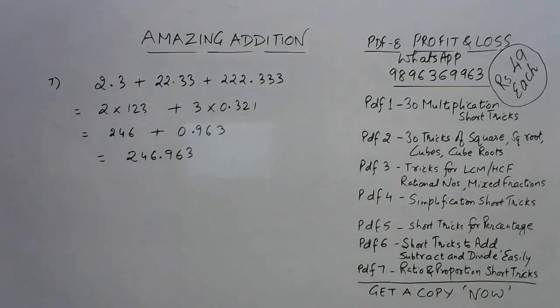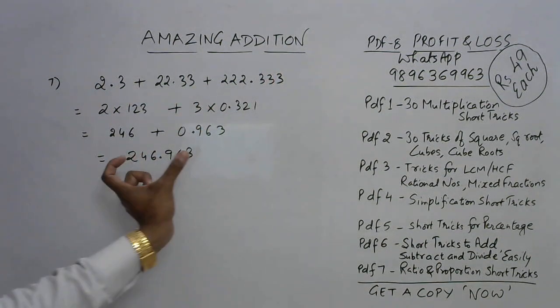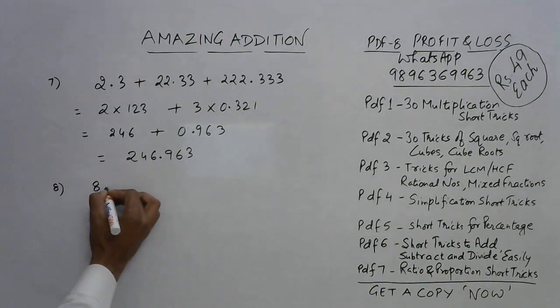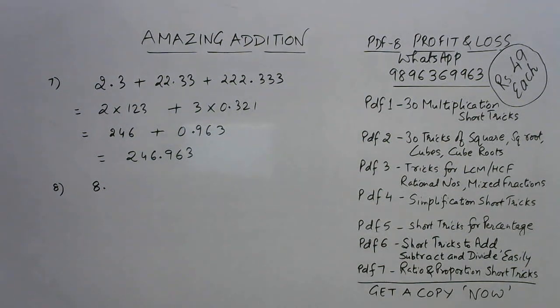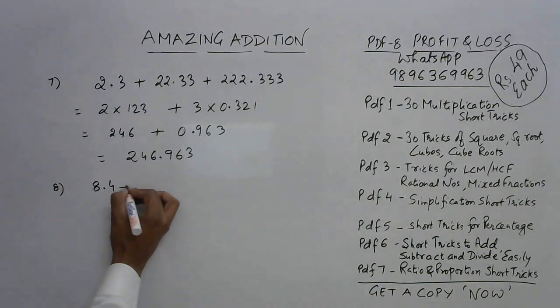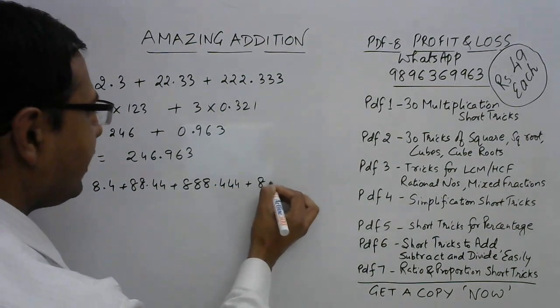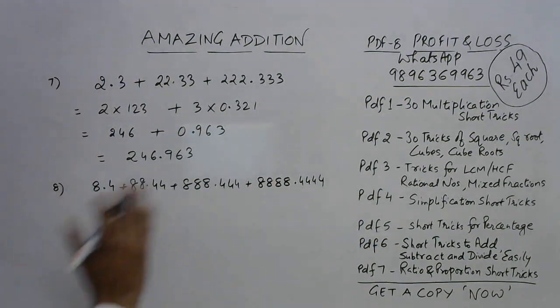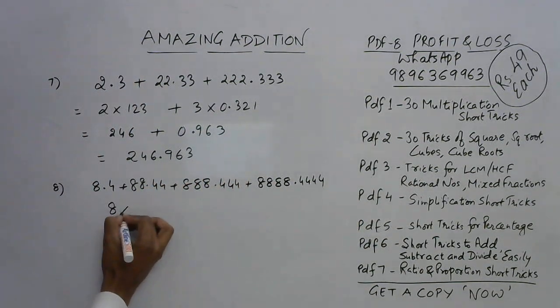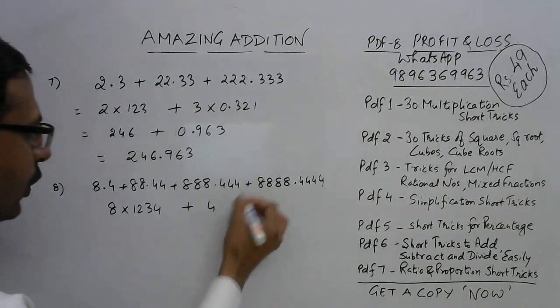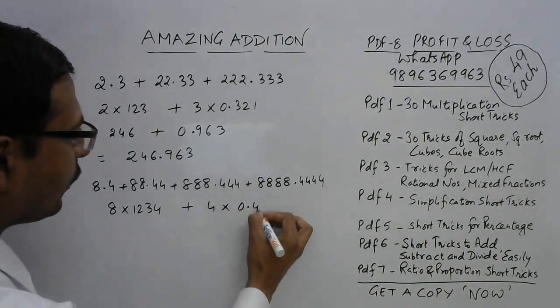There's no need to write the numbers one below the other, unnecessarily waste time in competitions. Just look at the problem, write these two numbers one below the other and then add them to get the final answer of this particular question. Let's have one more example, let's complicate things for ourselves now. I'll give you a number which is a little bit complicated: 8.4 + 88.44 + 888.444 and then we have 8888.4444. So which are the two numbers I need to write? The first one is 8×1234, that is the number in the front, and after that we have 4 after decimal so 4 multiplied by 0.4321.